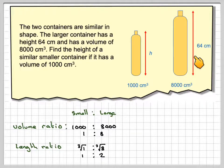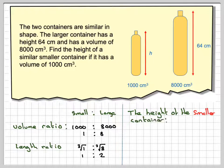Right, we're going from the larger to the smaller. Therefore, the height of the smaller container will be 1/2 times 64, which is going to be 32 centimeters.